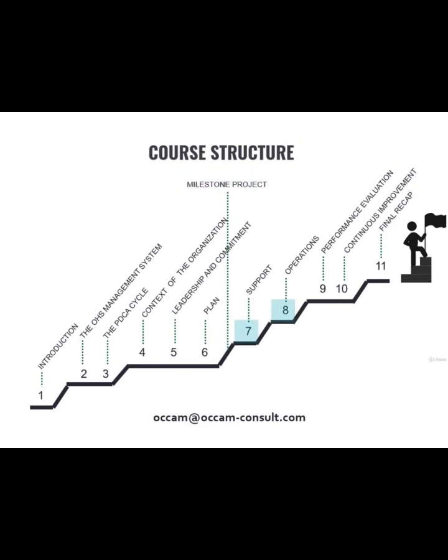Then we'll go to the section made of Chapters 7 and 8, which we call the Due Mountain. We'll learn about the few key processes you have to put in place in your company in order to become 45001 certified. Then we'll move on to Chapter 9, where you will learn about performance evaluation — basically through audits and indicators monitoring. Chapter 10 covers nonconformities management: what they are and how to plan corrective actions.